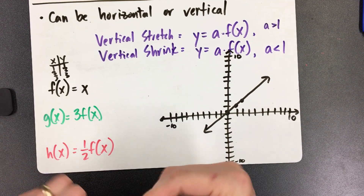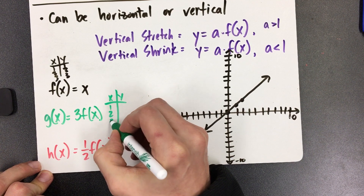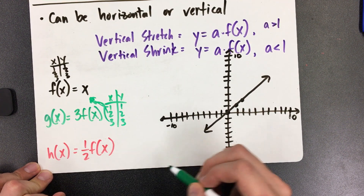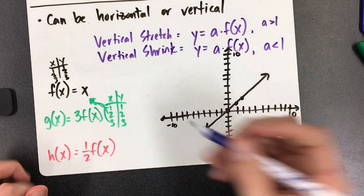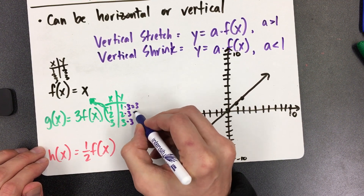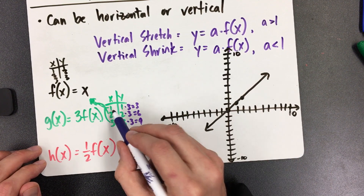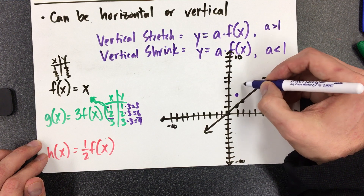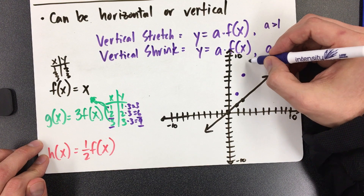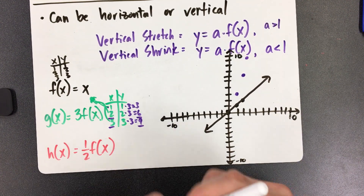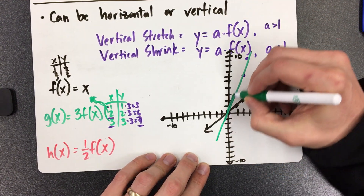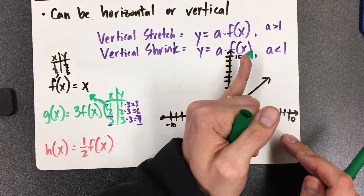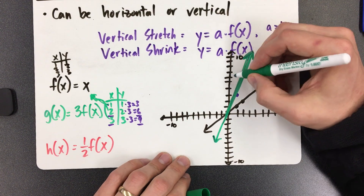If I make an x and y table for the vertical ones, it's actually pretty easy. You just take your normal numbers, plug them in like normal — 1, 2, 3 — and then at the end, you multiply your answer by 3. So 1 times 3 is 3, 2 times 3 is 6, 3 times 3 is 9. My new coordinates are (1,3), (2,6), and (3,9). This line is going to be steeper — that's g(x). Notice the x-intercept is still the same; it still crosses the x-axis at the origin.